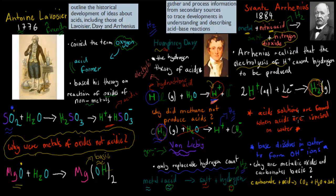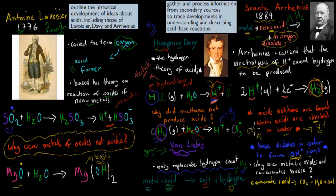Arrhenius's new theory stated that acid solutions are formed when acids are ionized in water — so it's the hydrogen ions present that make a solution acidic. And base solutions are formed when a base is put in solution and produces hydroxyl (OH⁻) ions. The OH⁻ ions make things basic. That was his theory.